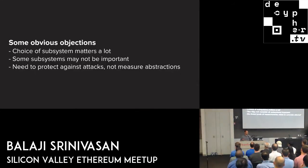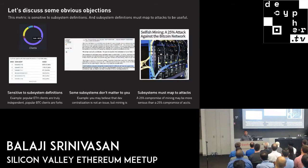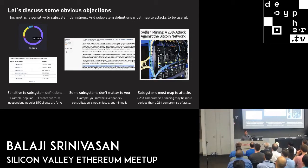There are obvious objections. First, the choice of subsystems matters a great deal. Second, you might not consider all subsystems important. Third, do these measurements relate to concrete attacks? For example, Vitalik pointed out that Geth and Parity are completely independent codebases, whereas the top Bitcoin clients — Bitcoin Unlimited, ABC and so on — are basically forks of the Bitcoin Core codebase, not full clean re-implementations like BTCD. So you can argue those aren't truly independent codebases, meaning there's more likely to be a shared bug. That's why I said the subsystems are illustrative — not definitive — just to show the general idea. You can also say certain subsystems just don't matter to you: Satoshi back in 2010 said he didn't believe a second compatible implementation would ever be a good idea.